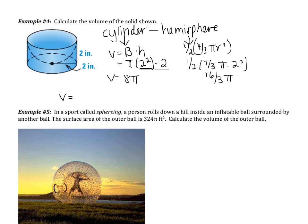So now the volume of my total figure is going to be the cylinder, 8 pi, subtract the hemisphere, 16 over 3 pi. So my volume ends up being 8 thirds pi inches cubed.